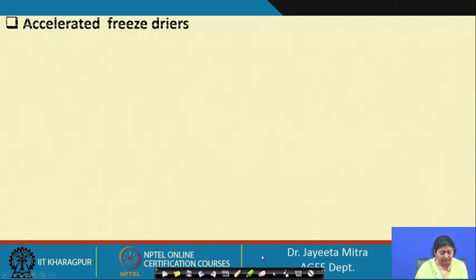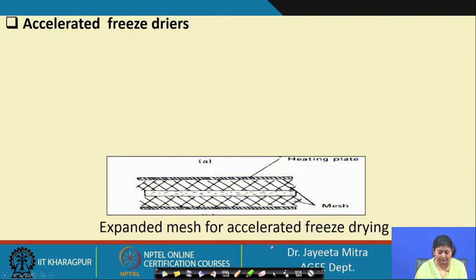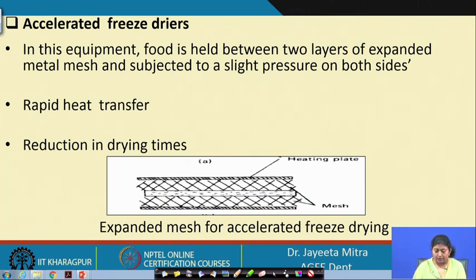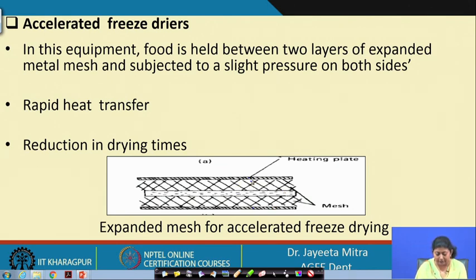The next system is the accelerated freeze dryer. In this equipment, food is held between two layers of expanded metal mesh and subjected to slight pressure on both sides. Rapid heat transfer results, reducing drying time. Since both the top and bottom are heating plates with a mesh between them, heat transfer takes place from both sides and drying is faster compared to single-side drying. The radiative source of heat can be applied to the material through the mesh, and the material dries from both sides.